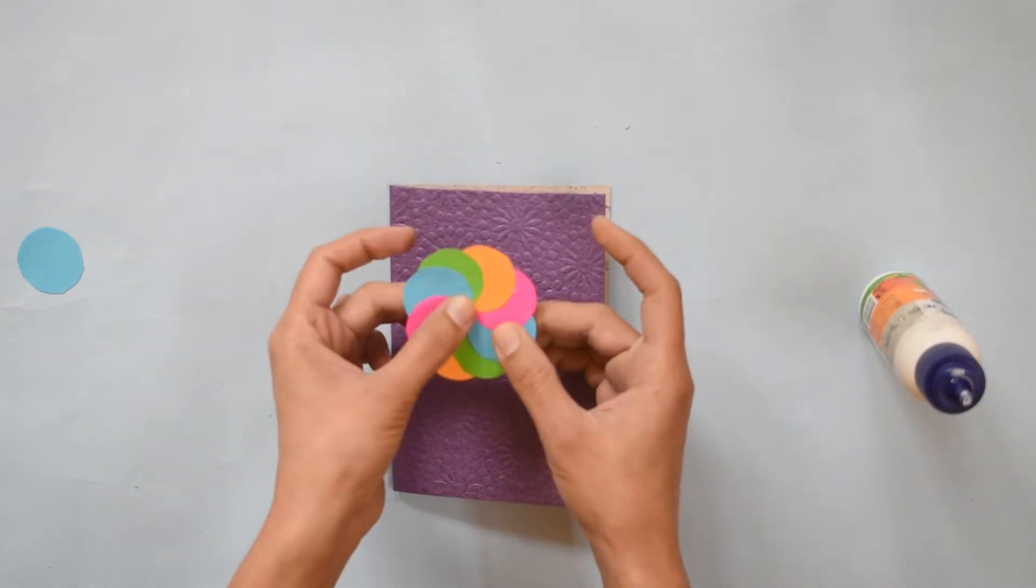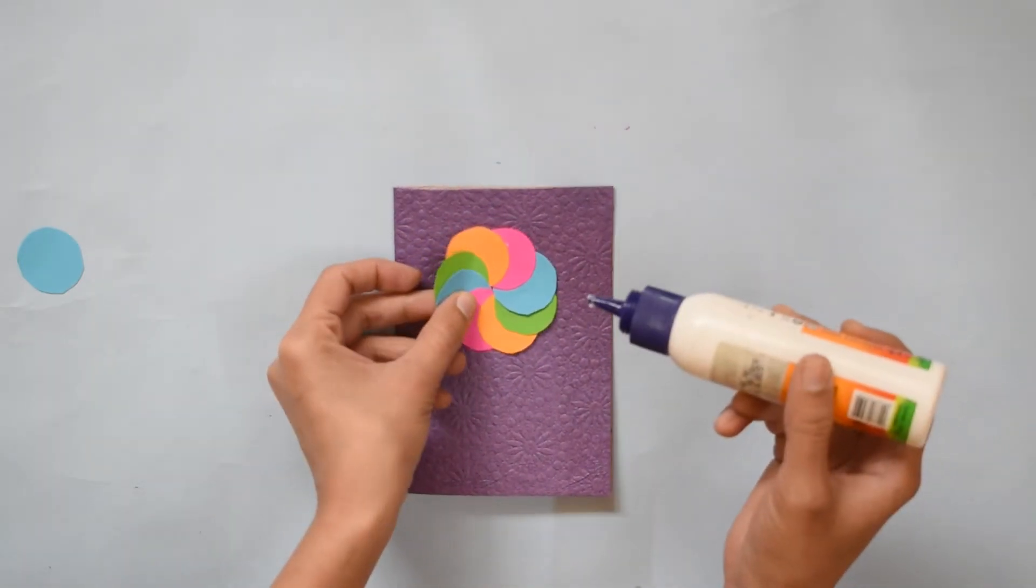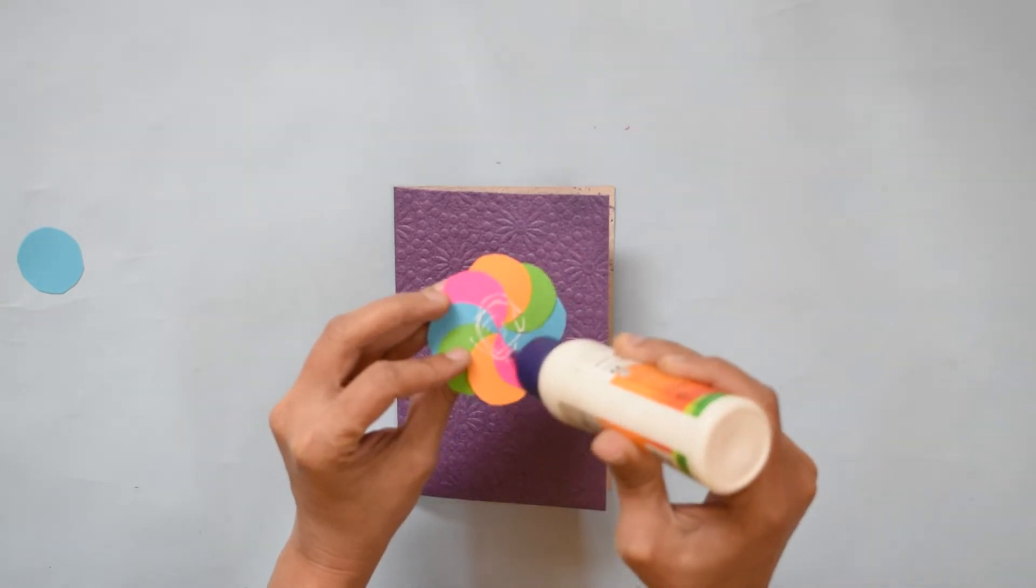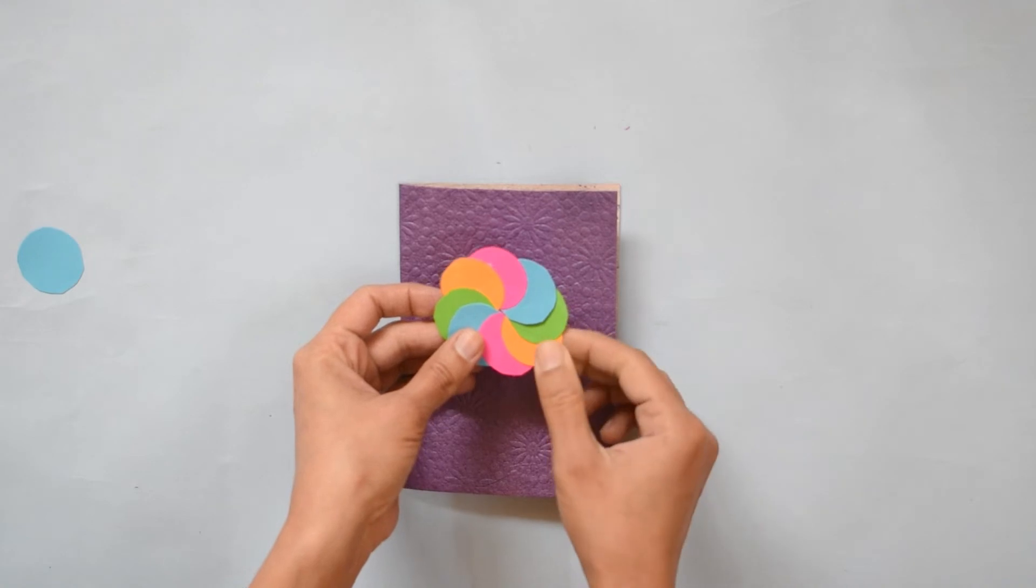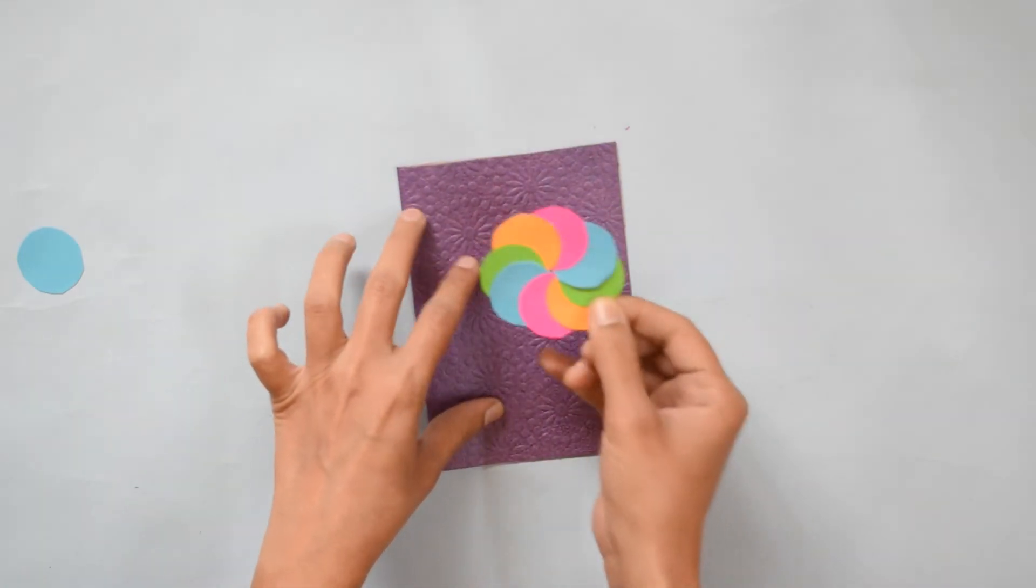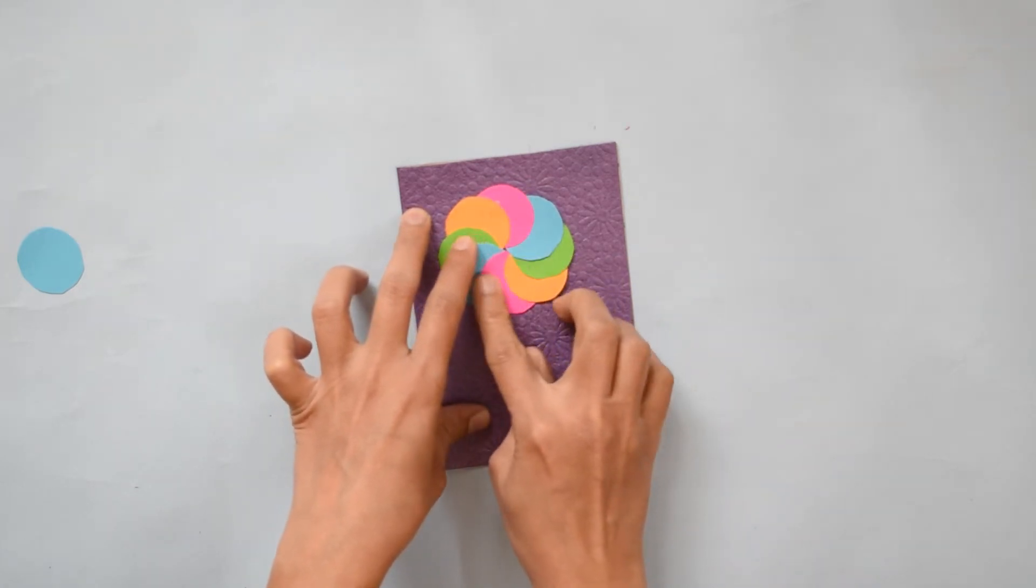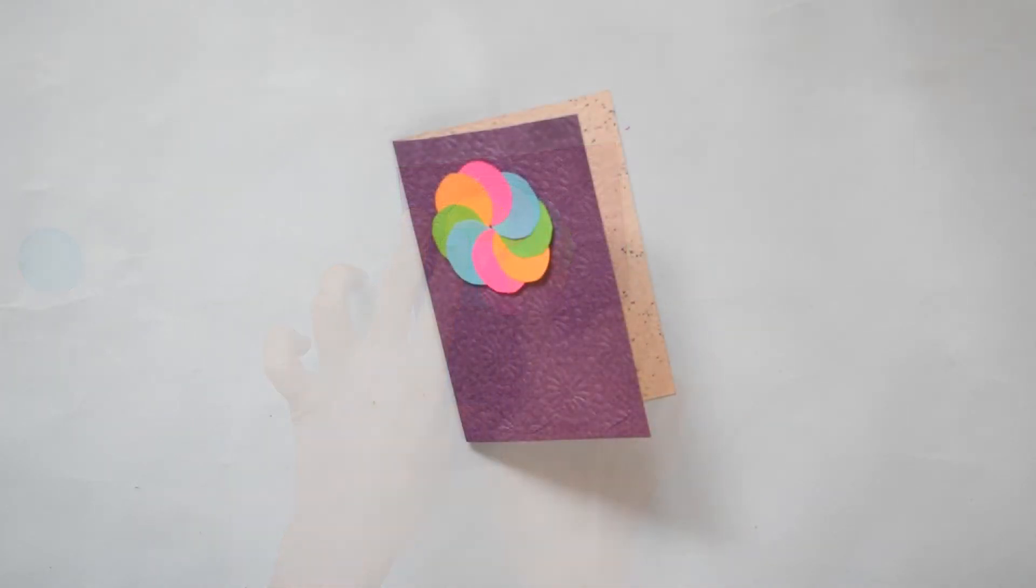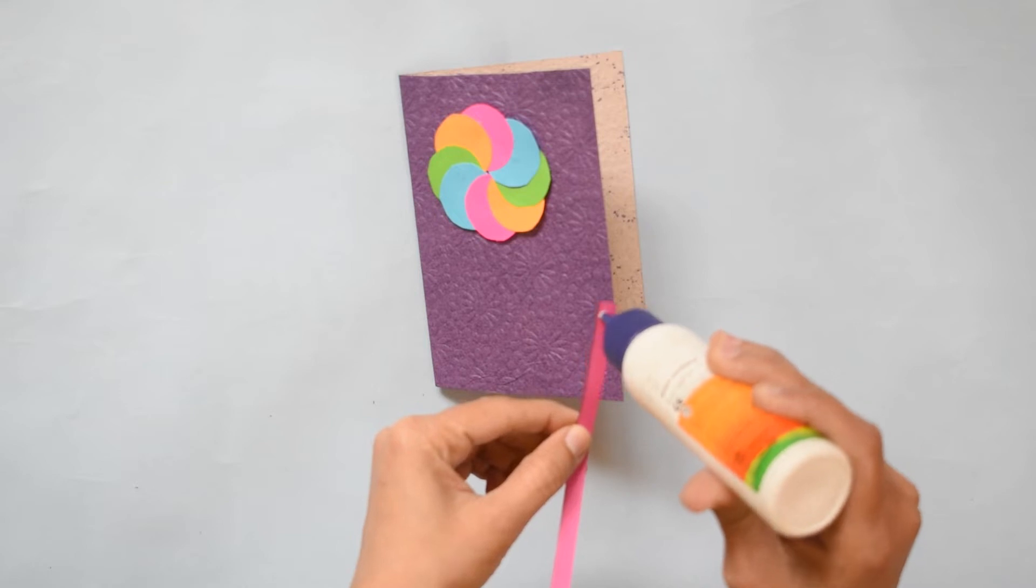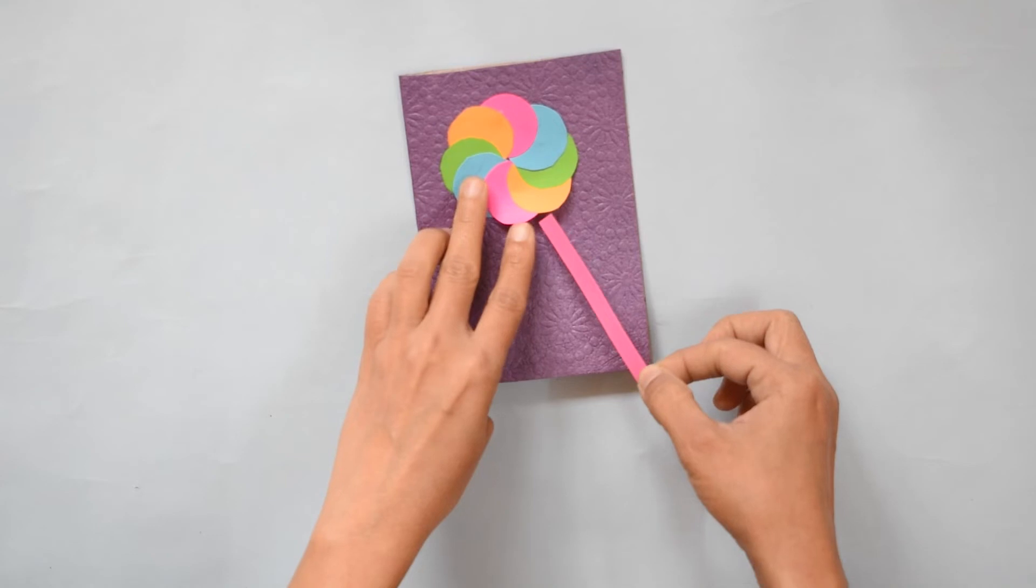Here I stick all the circles. Now stick this circle on the design paper and stick the strip also like this.